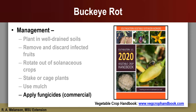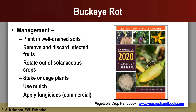A number of fungicides are available for use in commercial tomato production and are labeled for use against buckeye rot. A list of these fungicides is available in the Southeastern U.S. Vegetable Crop Handbook. There are, however, no home garden fungicides labeled for use against buckeye rot in tomatoes. For this reason, home gardeners will need to focus on the described non-chemical disease management methods. Even when fungicides are available for use, a combination of disease management practices should be used to help manage disease. Remember, when using fungicides, be sure to completely read and follow all label instructions. The label is the law.